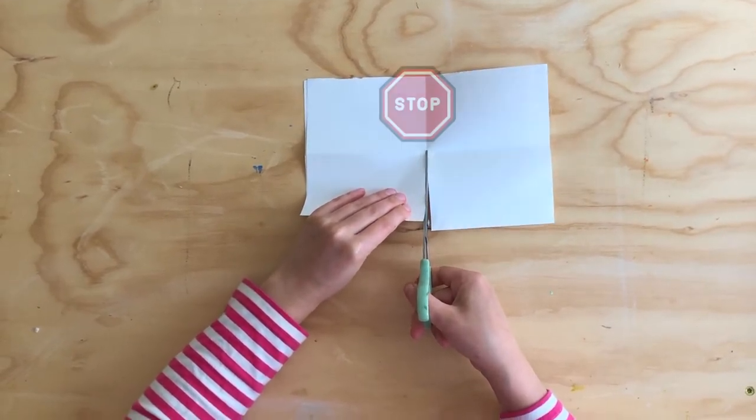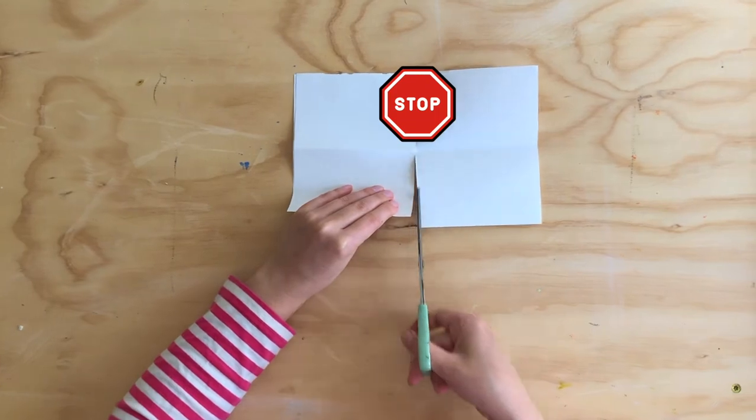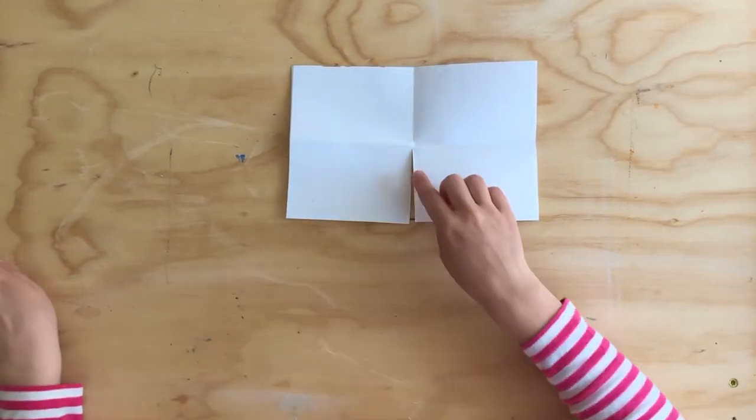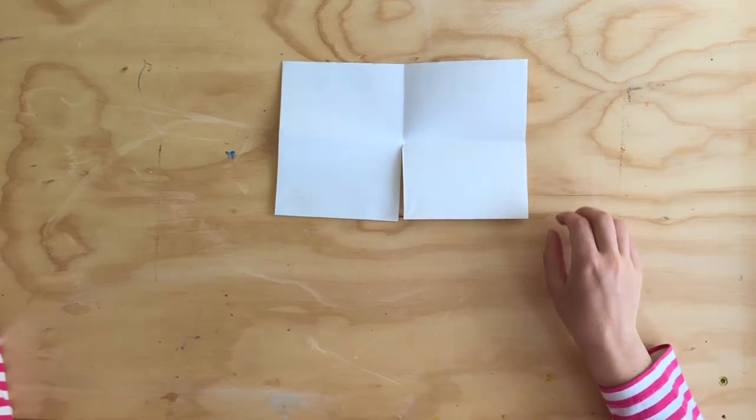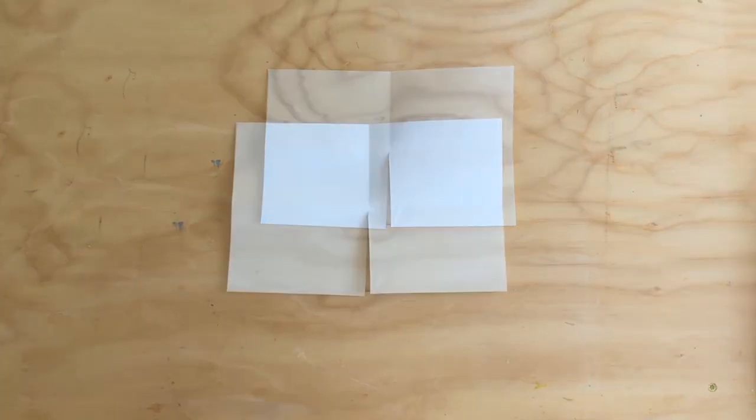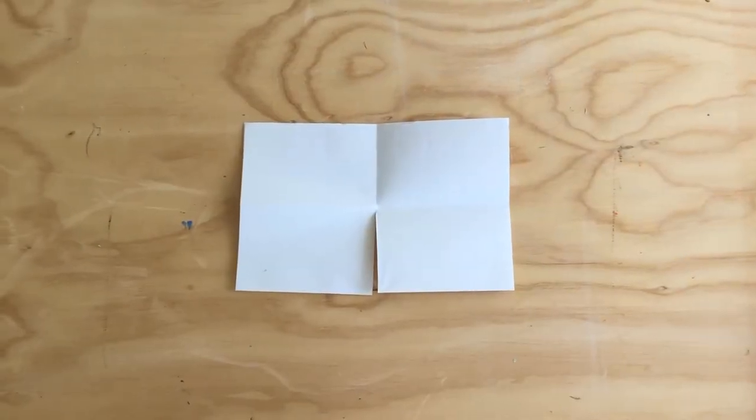Okay, and right here we've got to stop right there. Okay, that's really important. We don't want to cut all the way across or else our book will fall apart. Okay, so now we're ready for the next step.